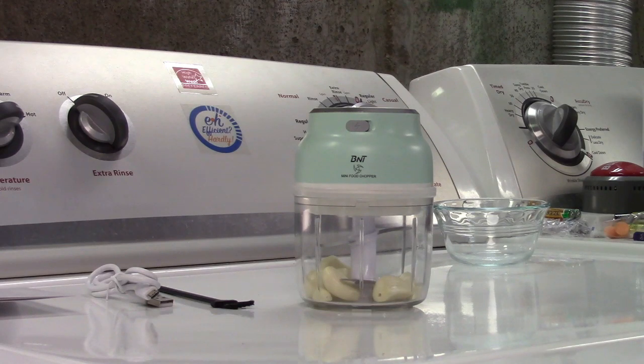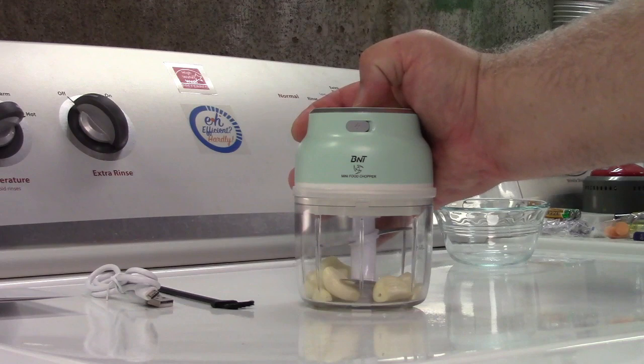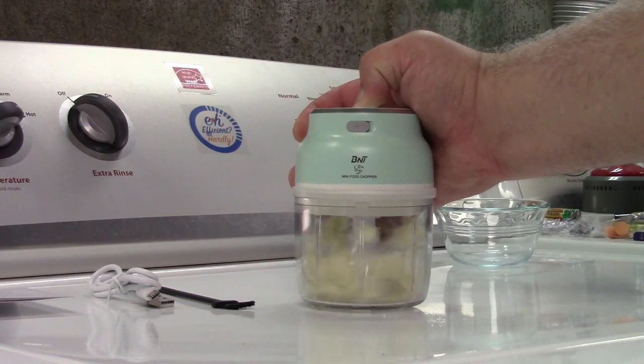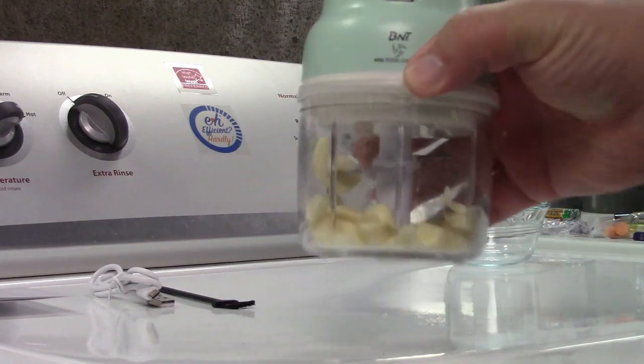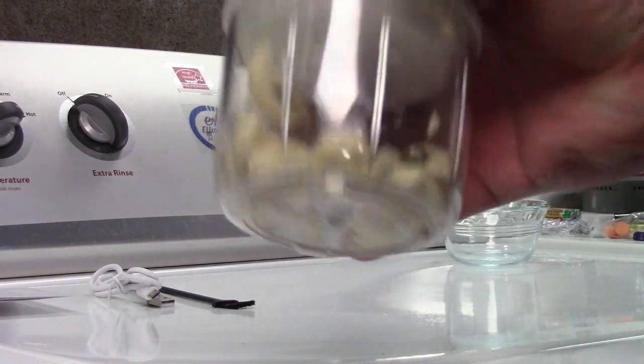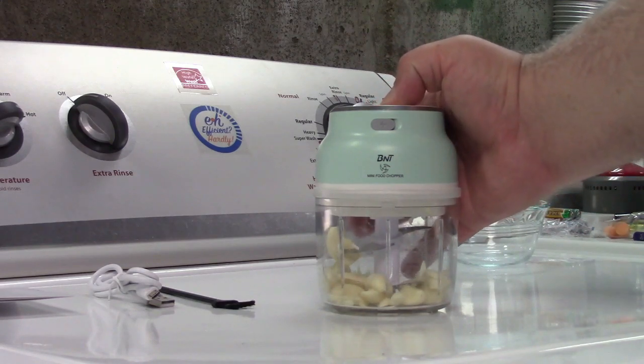I am going to let this run until no more garlic pieces are flying around inside. You can chop to whatever consistency you want. In fact, I'll do that just for a moment. You can see already how we've already chopped up that garlic. But I'm going to let this go because I want it very, very finely minced.